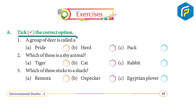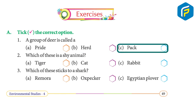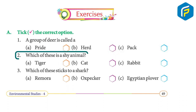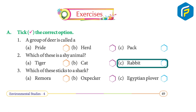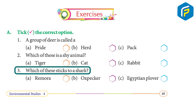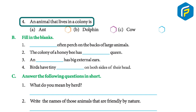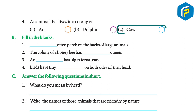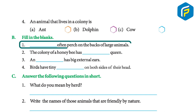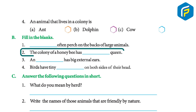Exercise — tick the correct option: One, a group of deer is called a herd. Two, a shy animal among tiger, cat, and rabbit is the rabbit. Three, the animal that attaches to a shark is the remora. Four, an animal that lives in a colony is the ant.